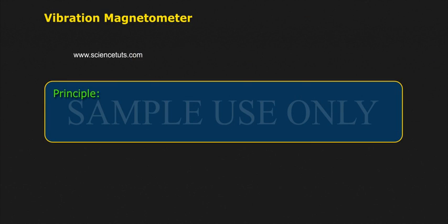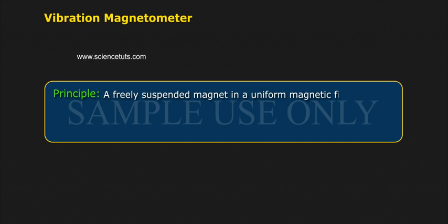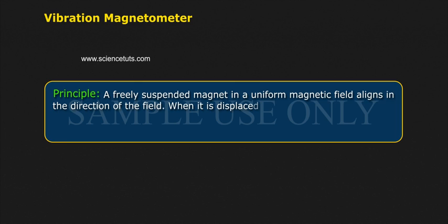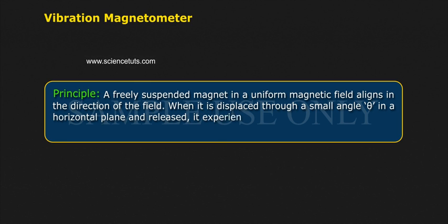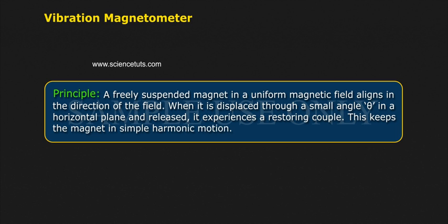Principle: A freely suspended magnet in a uniform magnetic field aligns in the direction of the field. When it is displaced through a small angle theta in a horizontal plane and released, it experiences a restoring couple. This keeps the magnet in simple harmonic motion.